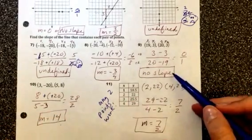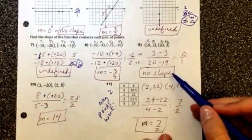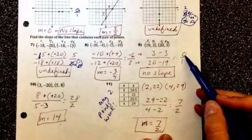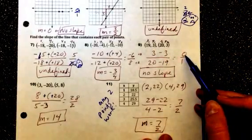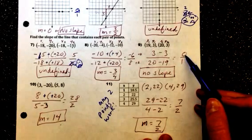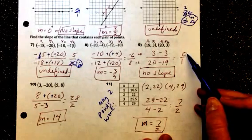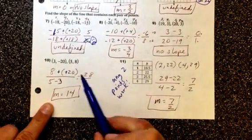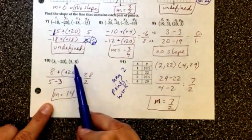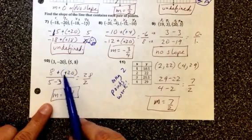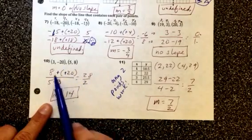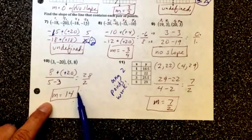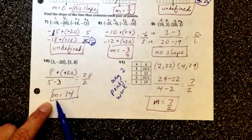Number nine is no slope because we end up with no difference at all in our y value, so because our rise ends up being a zero it's a no slope. Number 10, again it's 8 minus a negative 20 which is like saying 8 plus 20, and then 5 minus 3 is 2, so we end up with a pretty large slope here which is 14 when it's simplified.